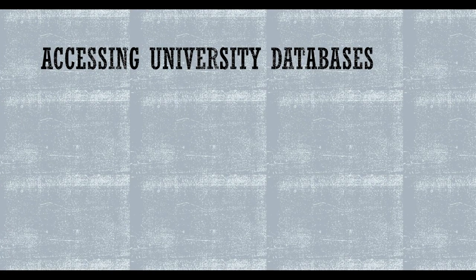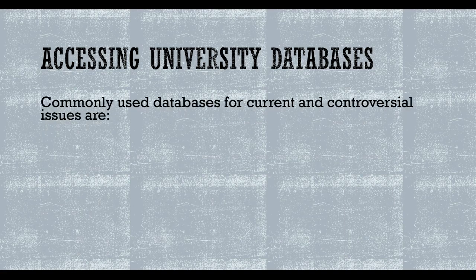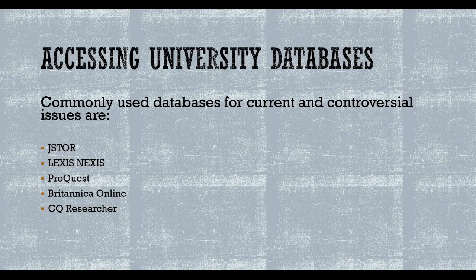It is wise to work with electronic sources available through your college library. Libraries hold important resources that are either not available on the web or not easily accessible to students. College libraries subscribe to a large number of databases, many of which offer peer-reviewed sources — a characteristic not true for most materials found on the open web. Commonly used databases include JSTOR, LexisNexis, ProQuest, Britannica Online, CQ Researcher, EBSCOhost, ERIC, and Academic Search Complete.